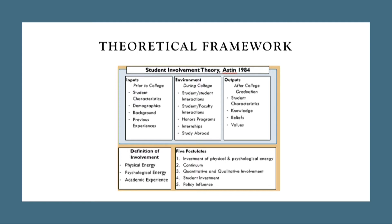Everything that happens during college is known as their environment. This includes the interactions they make, whether that be student-to-student or student-to-faculty, as well as any involvement they participate in — the classes they take, student organizations, internships, research, and honors programs. Everything that happens after college is known as their outputs, which consists of the knowledge, beliefs, and values that change over time as they participate through college.